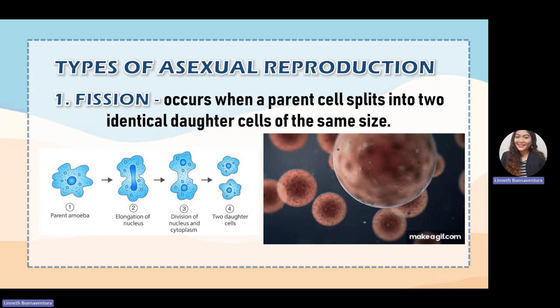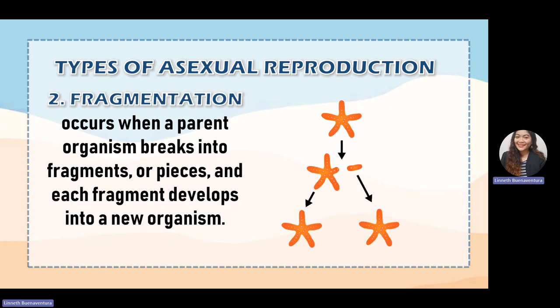First is fission. From the word itself, fission is the process of dividing. It occurs when a parent cell splits into two identical daughter cells of the same size. For example, a parasitic amoeba — the parent amoeba elongates its nucleus containing the genetic material, and once elongated, it divides into two, forming two daughter cells identical to the parent.